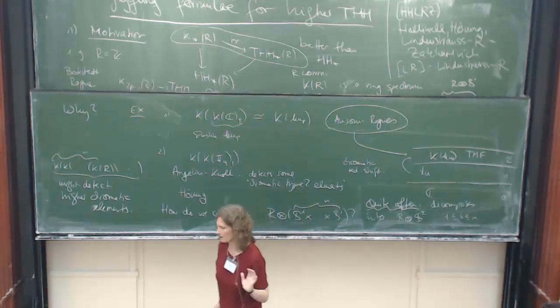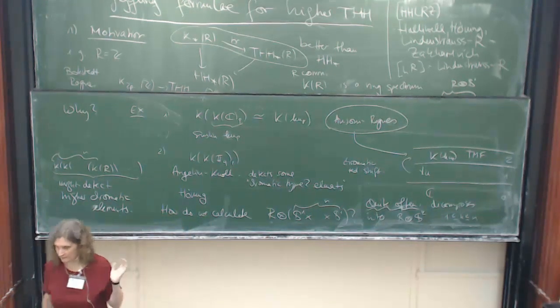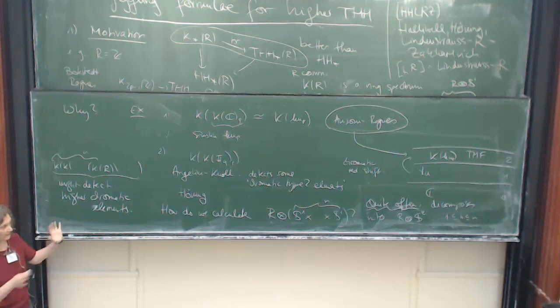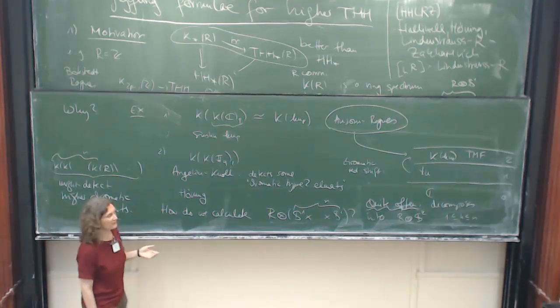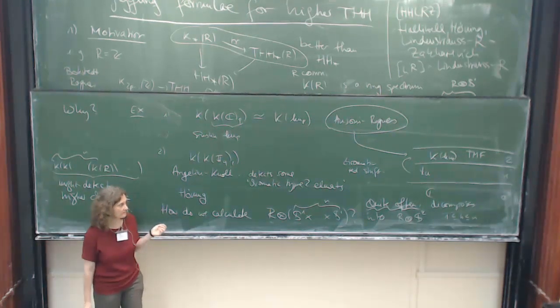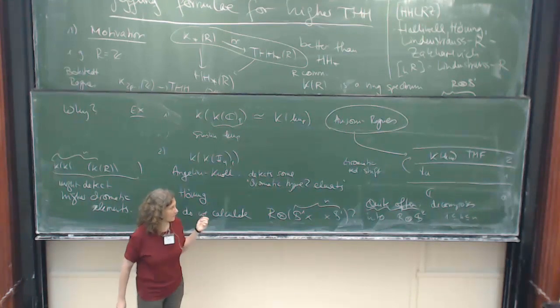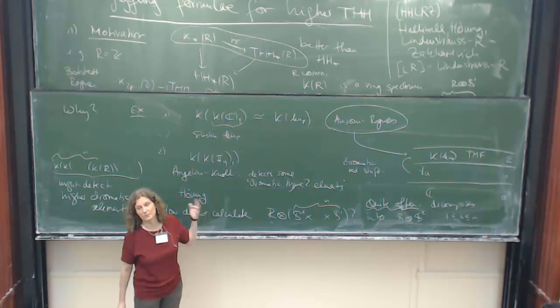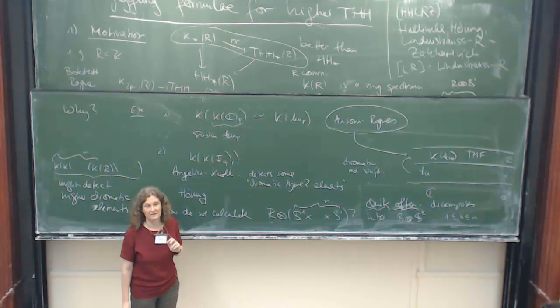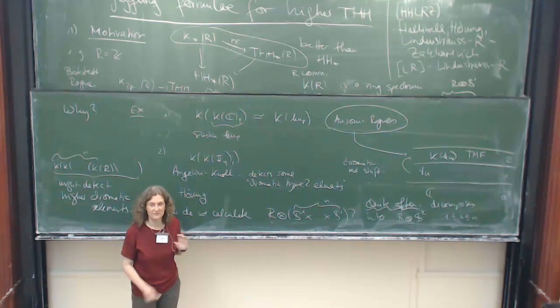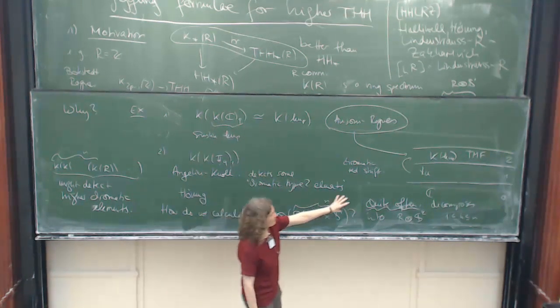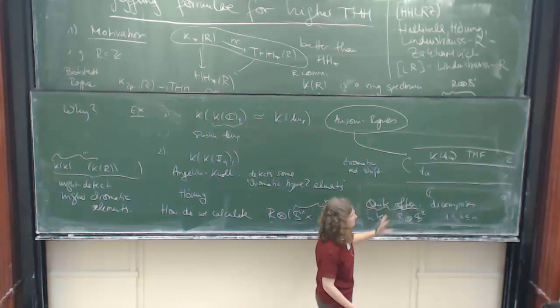So the problem of calculating this torus homology is sort of reduced often to calculating homology or homotopy groups of things tensed with a sphere. I should warn you that there are examples where this does not happen. A positive example where it does happen is the field, a prime field, everything is fine there. But if you take an innocent thing like polynomial algebra over the rationals divided by square of the generator, this doesn't decompose. So this is really, you have to be lucky, but sometimes you are lucky.